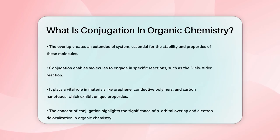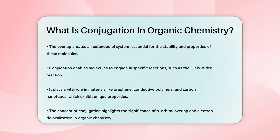In practical terms, conjugation is important because it allows molecules to participate in specific reactions like the Diels-Alder reaction, and it's a key feature in materials like graphene, conductive polymers, and carbon nanotubes. These materials have unique properties due to their extensive conjugated systems. So, conjugation in organic chemistry is all about how the overlap of p orbitals and the delocalization of electrons make molecules more stable and versatile.